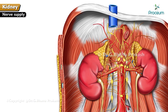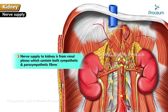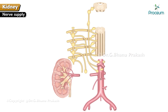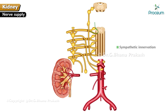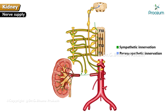Nerve supply to the kidney is from the renal plexus, which contains both sympathetic and parasympathetic fibers. The renal plexus reaches the kidney along the renal artery. Sympathetic fibers are derived from T10 to L1 spinal segments, and parasympathetic fibers are derived from the vagus nerves.